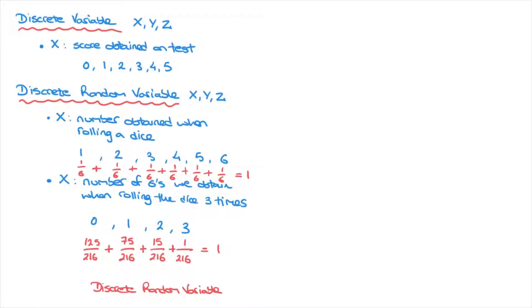One important thing we're going to learn about is something known as a probability distribution function, which sounds complicated, but all it really is is a function which gives us the probability that the discrete random variable takes on its possible values. We write this as: the probability that capital X equals lowercase x is equal to some function of x. Capital X is the discrete random variable, while lowercase x represents the possible values it can take.